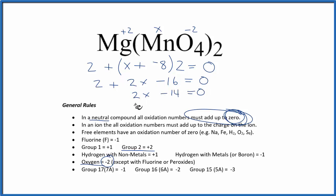We subtract 14 from both sides. 2x equals positive 14. So x, and that's going to be the oxidation number on the manganese, divide both sides by 2. That's 7. It's going to be a positive 7.